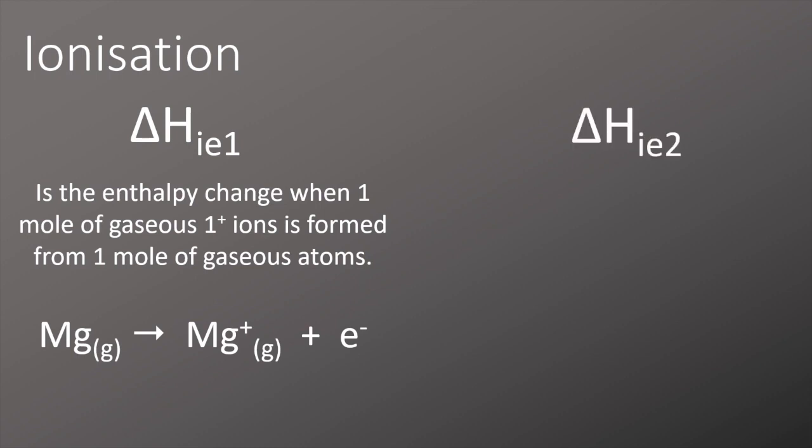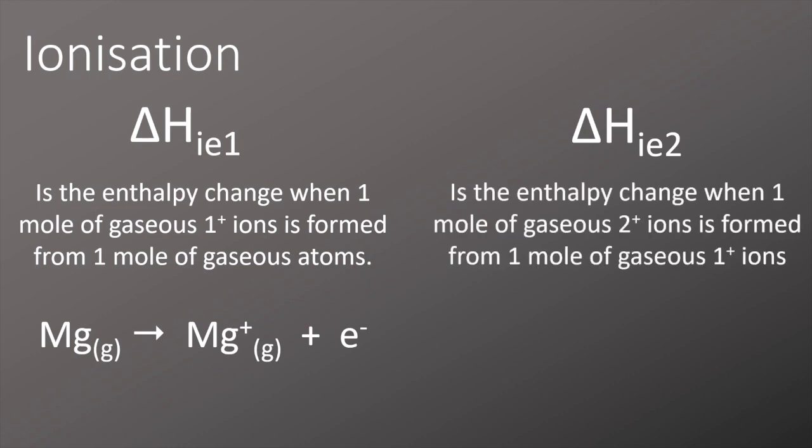We also have the second ionization energy which is shown as delta HIE2. It's the enthalpy change when one mole of gaseous two plus ions is formed from one mole of gaseous one plus ions and can be shown as an equation where Mg one plus ion makes an Mg two plus ion and one electron.